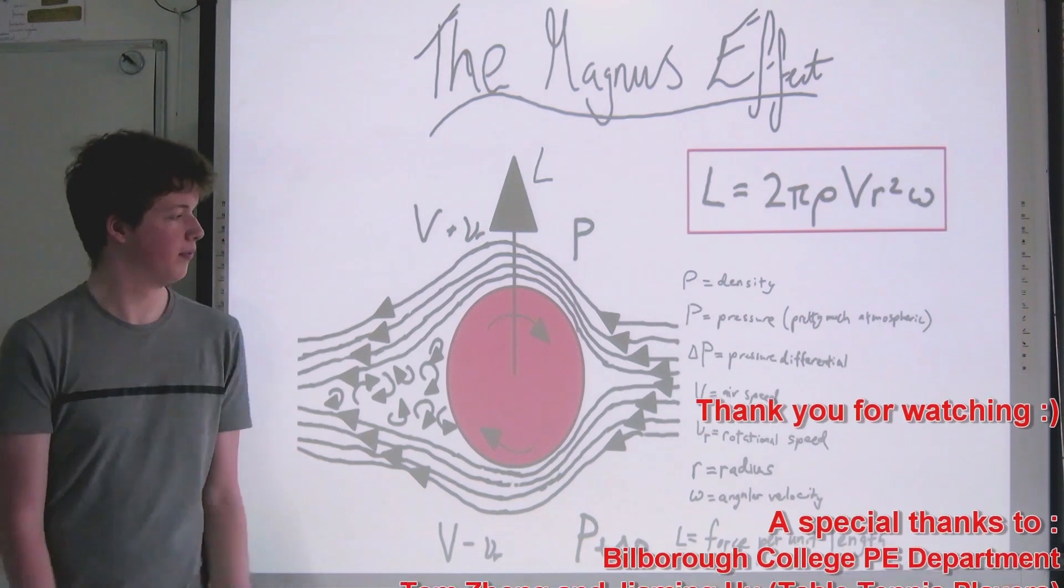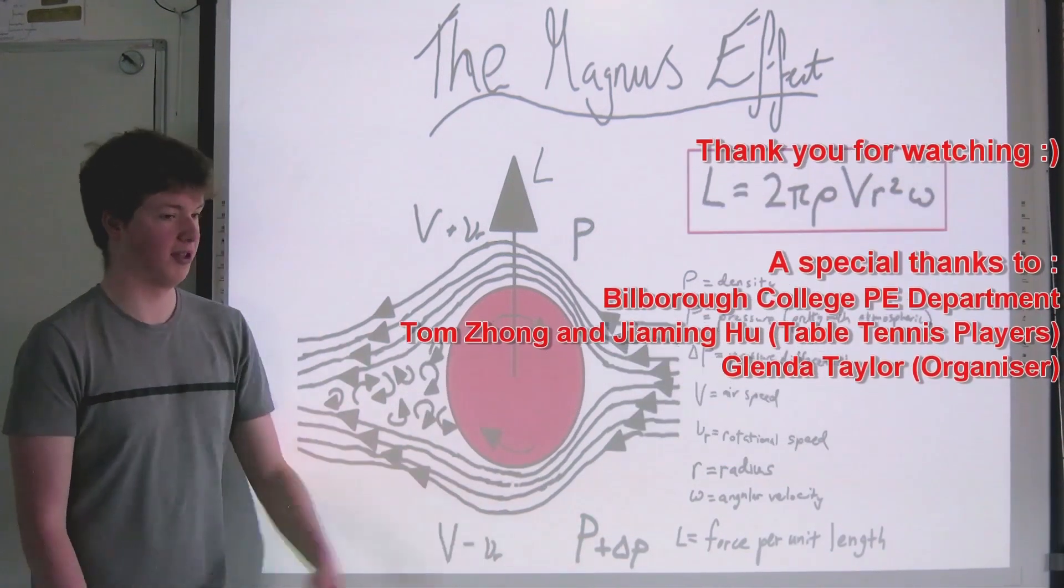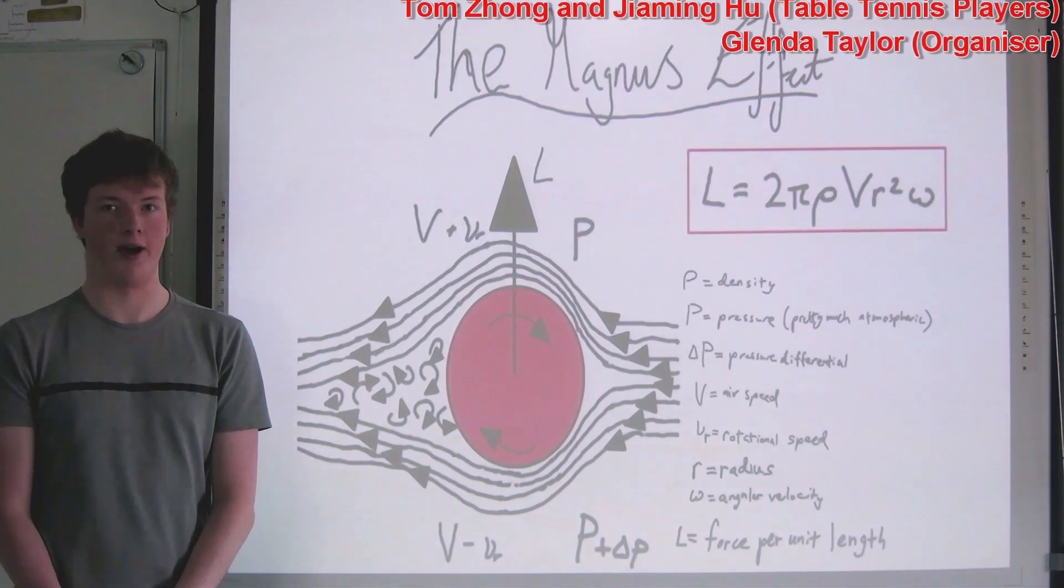Using our derivation, we've shown that the force travels upwards, as there's an extra pressure at the bottom of the cylinder. This is what causes the ping-pong ball to deflect from the trajectory when it's spun by the player.